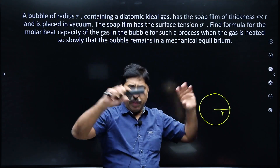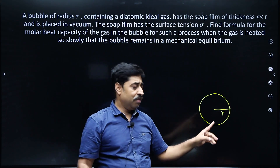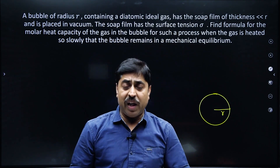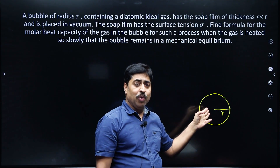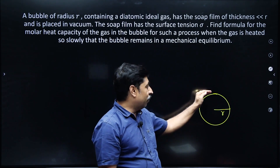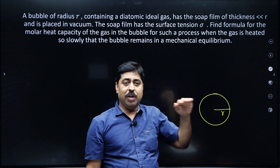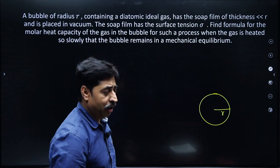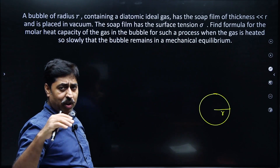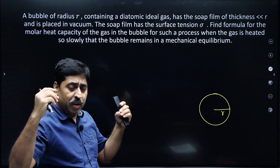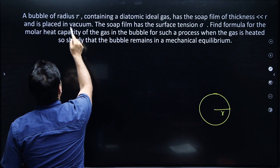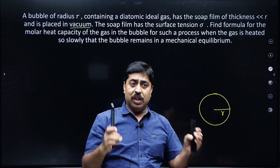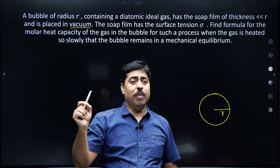By some mechanism — not specified in the question — the gas inside the bubble is heated very slowly, so that the bubble is in mechanical equilibrium. If you heat it very fast, then a small segment on the surface may get accelerated. That is not the case here; any part of the surface is not accelerated. The bubble is kept in vacuum, with an ideal diatomic gas inside, heated slowly and always in mechanical equilibrium.